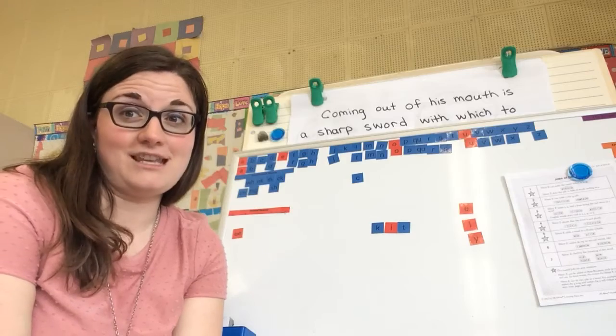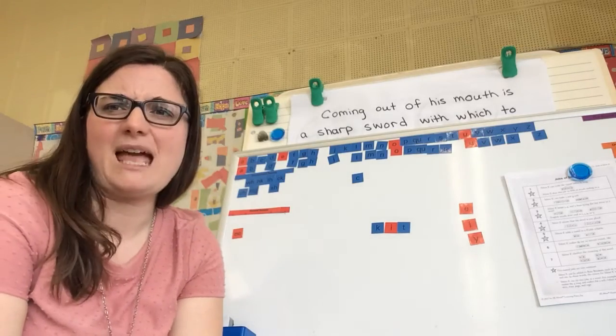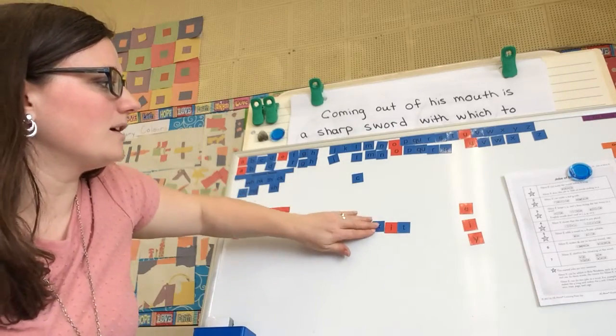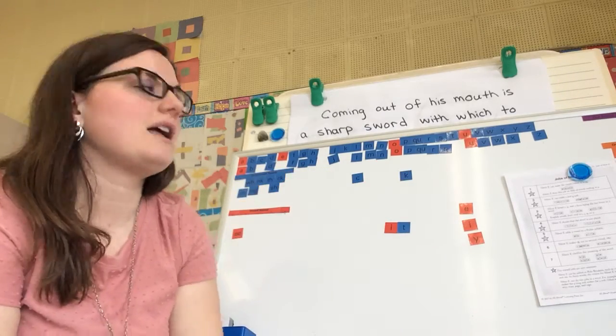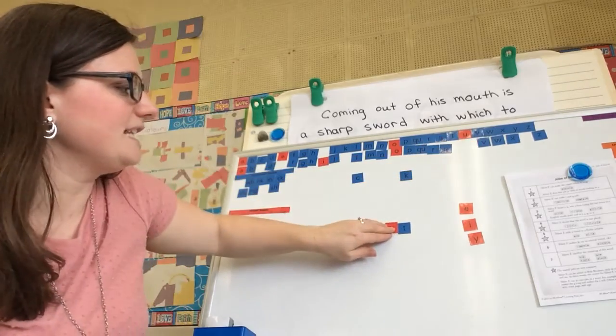And there's some other words that you're going to do at home like cut. We have to try and determine would that be a C or would that be a K? So K, U, T. We need a U and a T.